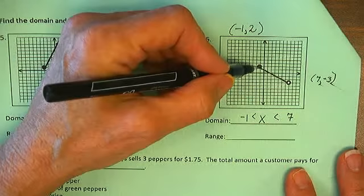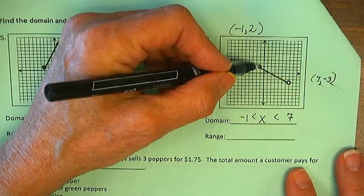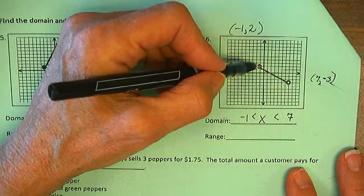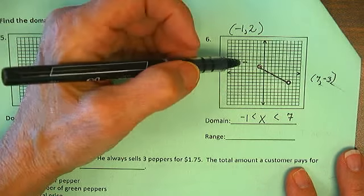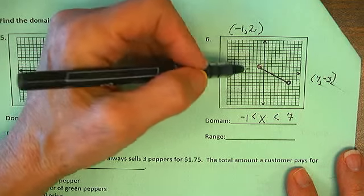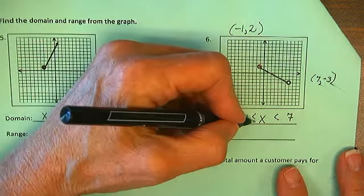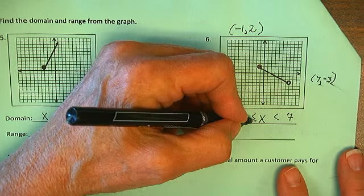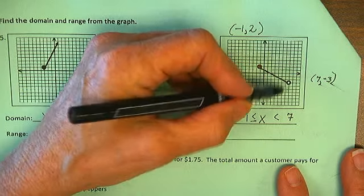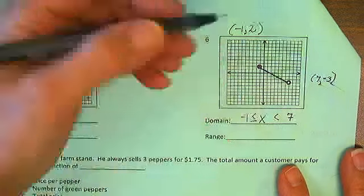Do we include negative 1? It's a solid line, so we do include it. This is an open line, so we do not include it.